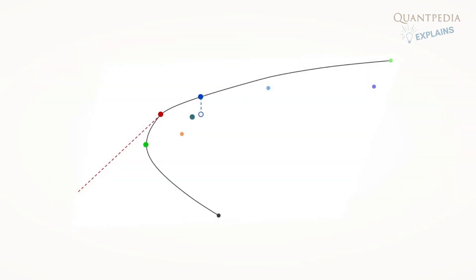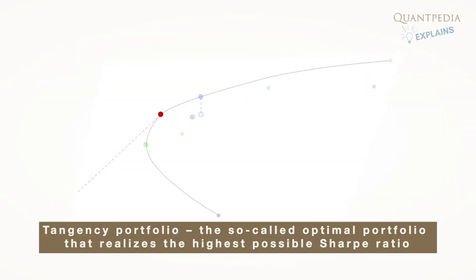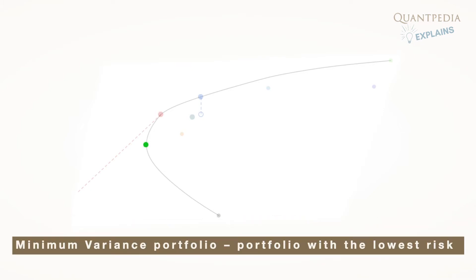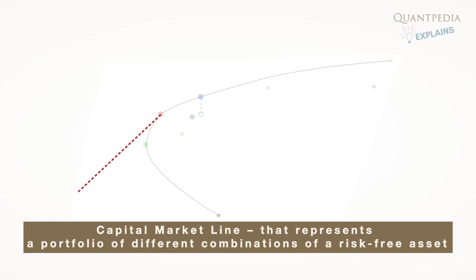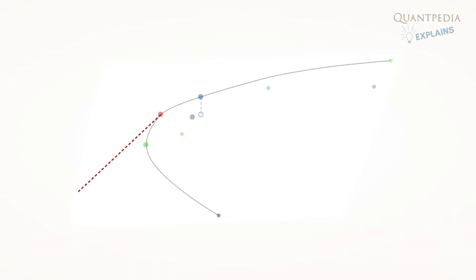The efficient frontier charts also display the tangency portfolio, the so-called optimal portfolio that realizes the highest possible Sharpe ratio, minimum variance portfolio, the portfolio with the lowest risk, and capital market line that represents a portfolio of different combinations of a risk-free asset and a tangency portfolio.